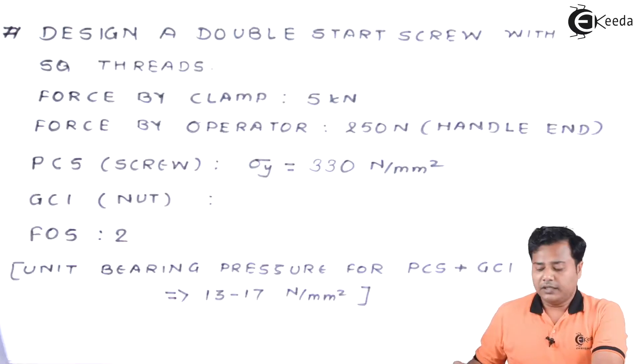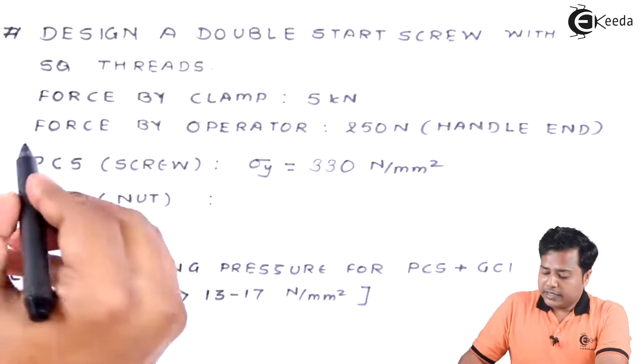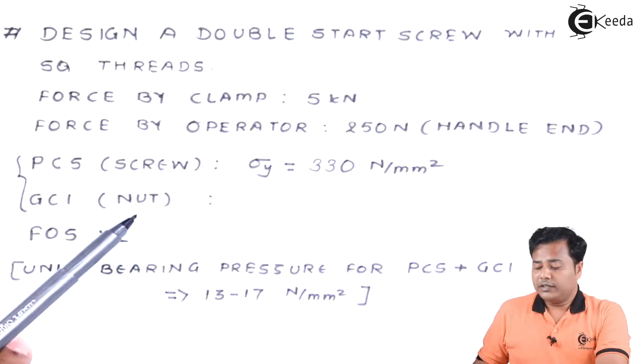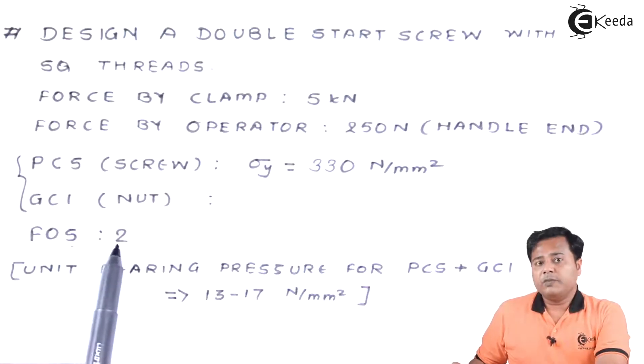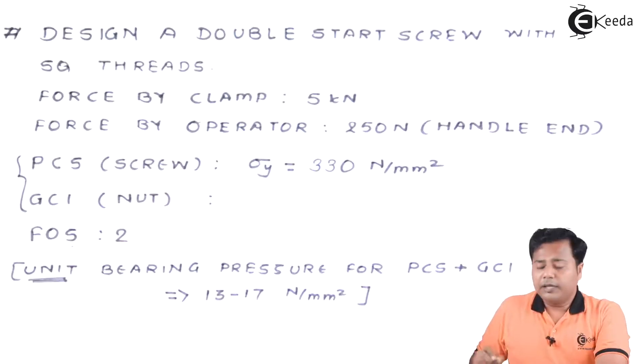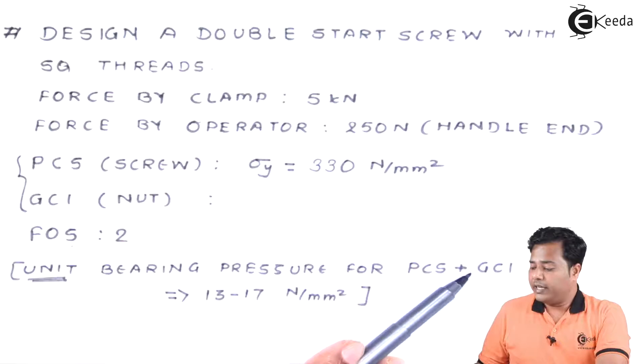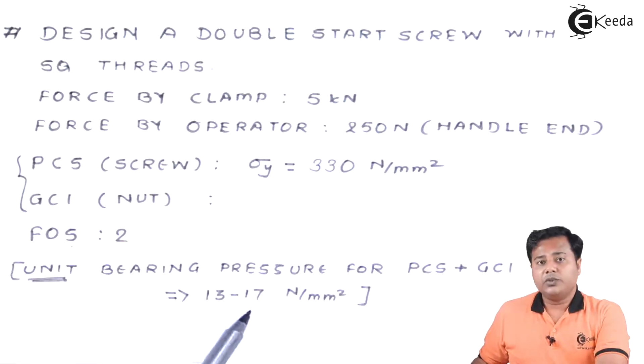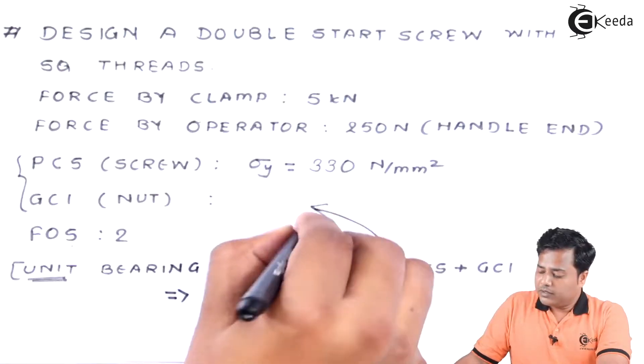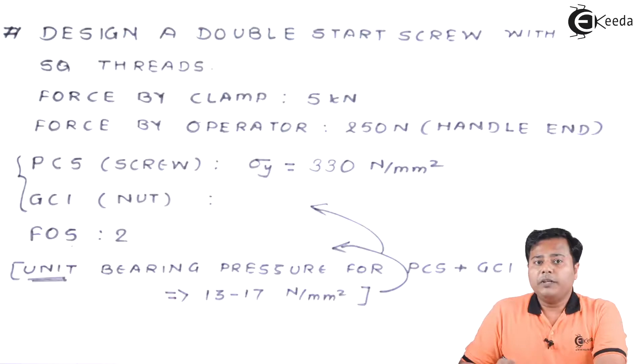Then comes the material. They have already specified the materials for our assembly. One is plain carbon steel for the screw and grey cast iron for the nut. The specific values are already mentioned. Factor of safety is specified to be 2. An important declaration is unit bearing pressure for plain carbon steel and grey cast iron is between 13 to 17 N per millimeter square, the important material property between two different materials.